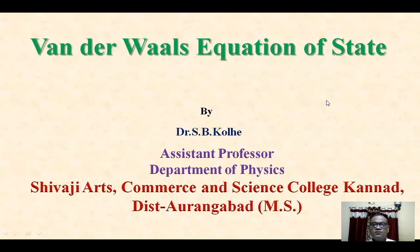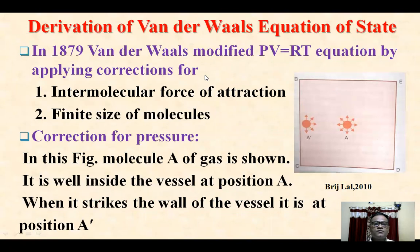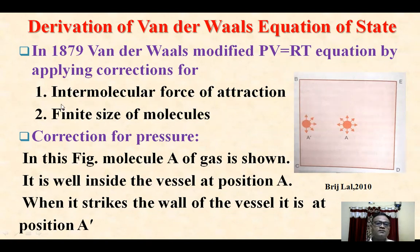Today we will discuss Van der Waal's Equation of State. You will see the derivation of this equation. In 1879, Van der Waal modified the ideal gas equation P = RT by applying corrections for intermolecular force of attraction and finite size of molecules. The first term is related to pressure and the second term is related to volume. Van der Waal applied correction for pressure and correction for volume in this gas equation.